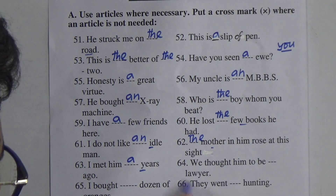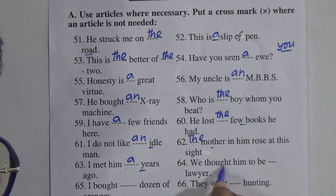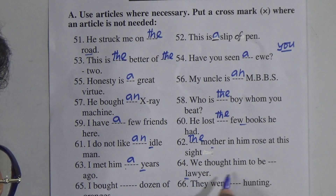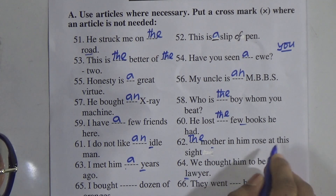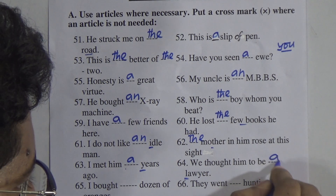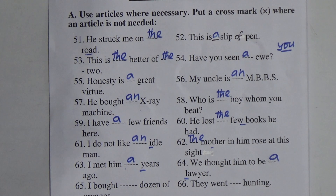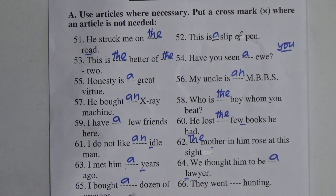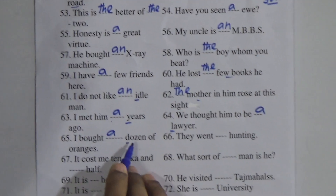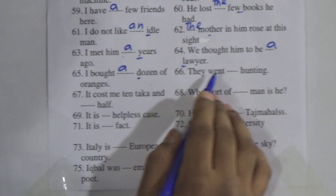Number 63: 'I met him — years ago.' Here 'y' is a consonant, so we put 'a' — 'I met him a years ago.' Number 64: 'We thought him to be — lawyer.' 'L' is a consonant, so we put 'a' — 'We thought him to be a lawyer.' Number 65: 'I bought — dozen of oranges.' 'Dozen' starts with a consonant, so we put 'a' — 'I bought a dozen of oranges.'